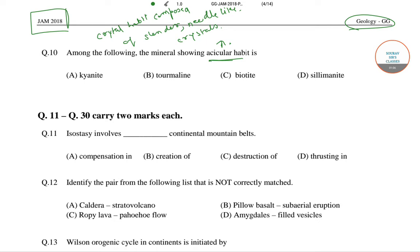The minerals with acicular habit include mesolite, natrolite, sillimanite, rutile, etc. So the correct answer of this question is option number D — that is, sillimanite is the mineral that shows acicular habit, as it is composed of slender needle-like crystals.